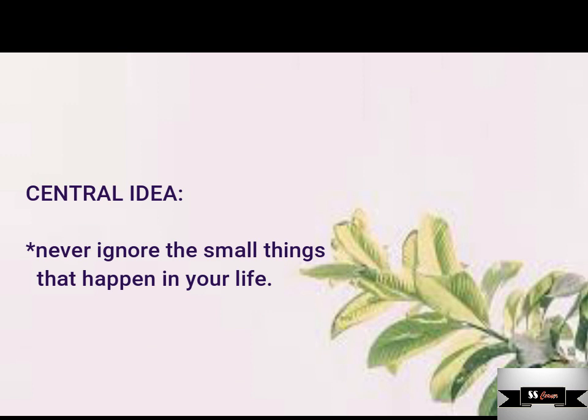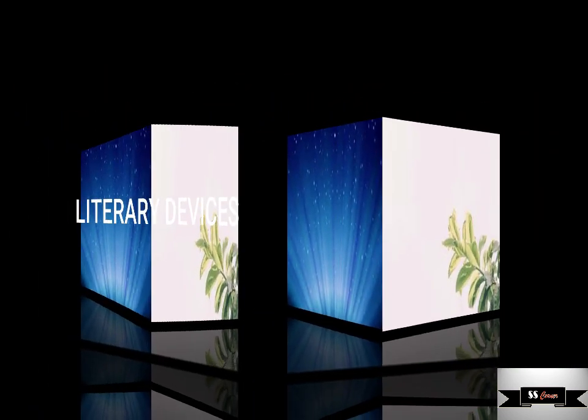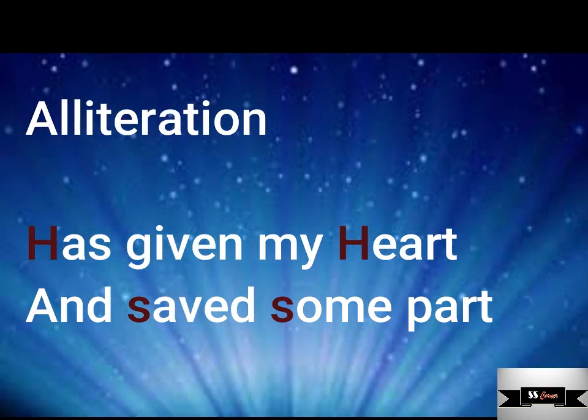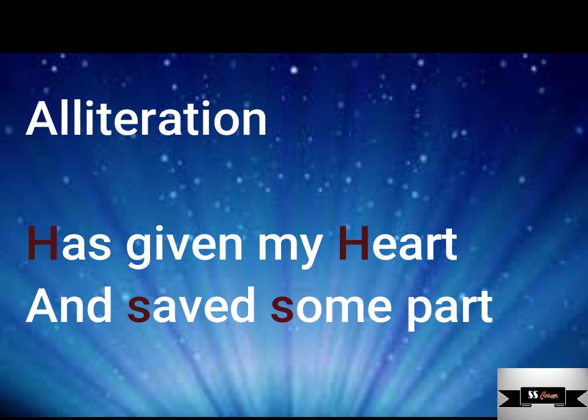With that we've come to the end of the interpretation of the poem. Now let's see what literary devices are used. First, the rhyme scheme of the poem is A-B-A-B-C-D-C-D. The next poetic device used in the poem is alliteration, which is the occurrence of the same letter or sound at the beginning of adjacent or closely connected words. So rhyme scheme and alliteration are the poetic devices used in this poem.